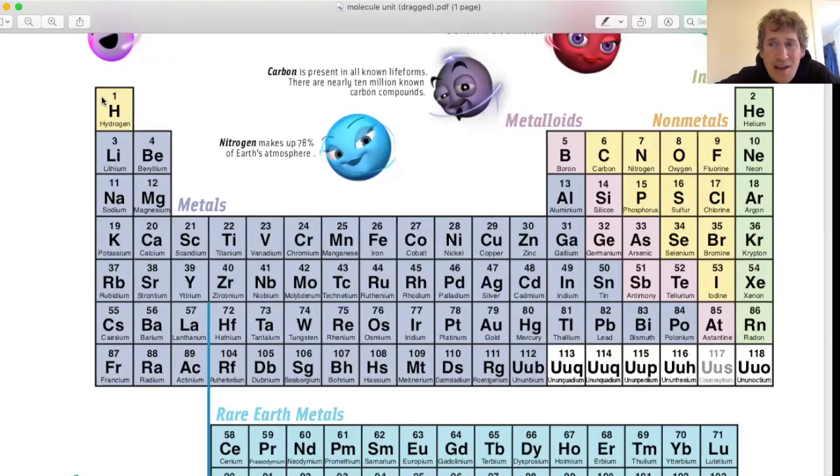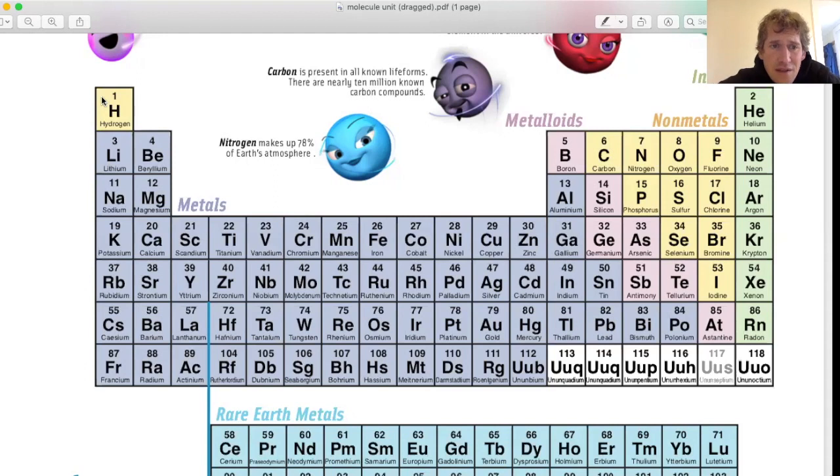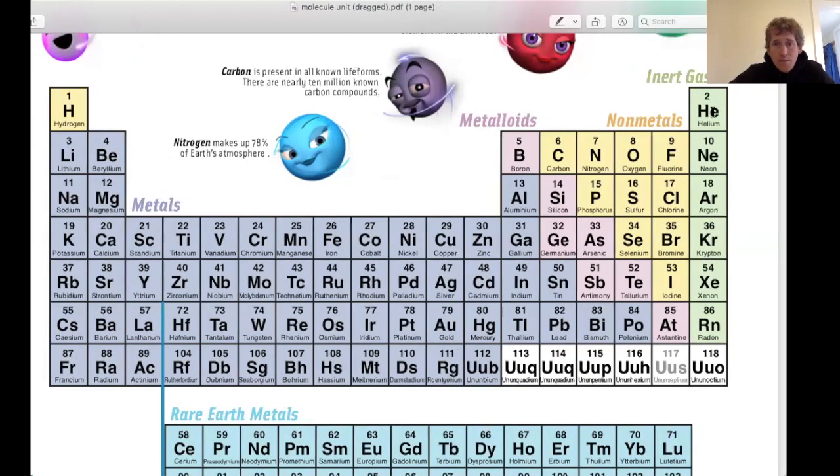In the earth's atmosphere, nitrogen is actually 78% of the earth's atmosphere. Let's look at the numbers though. Hydrogen has one proton, its atomic number is one. Helium has two because it's number two. Carbon number six, nitrogen number seven, seven protons. Oxygen is eight protons, and so on. That's how you figure out how many protons are in any element.